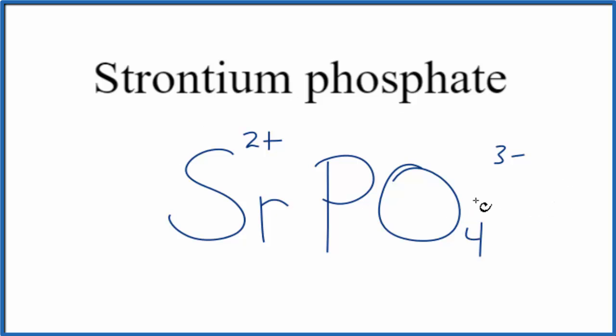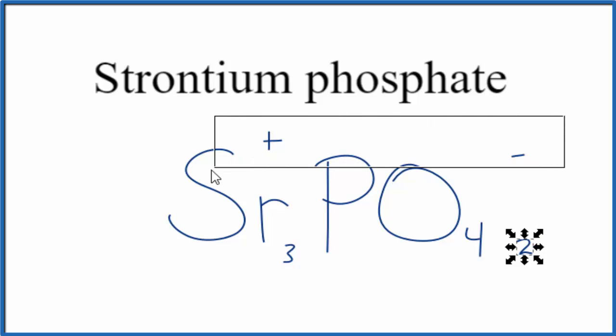So we need the charges to add up to 0, give us a net charge of 0. It's a little difficult. We have a 2+ and a 3-. So let's use the crisscross method to help us out. We'll move the 3 over here and the 2 out here, and get rid of these symbols.